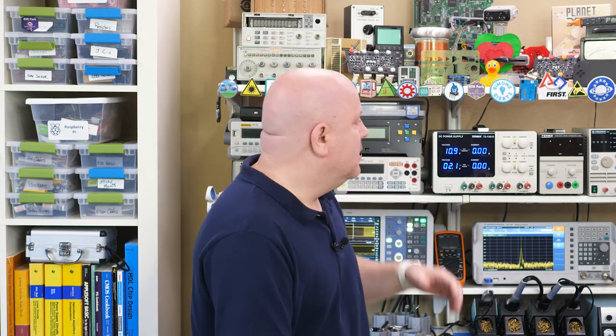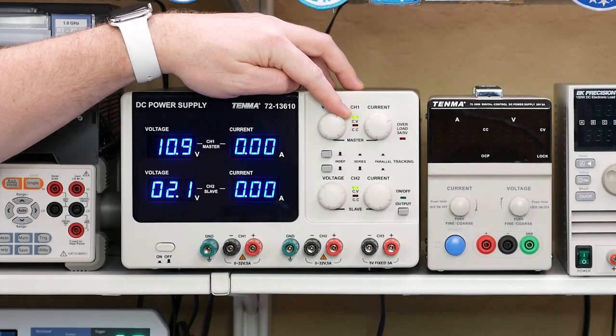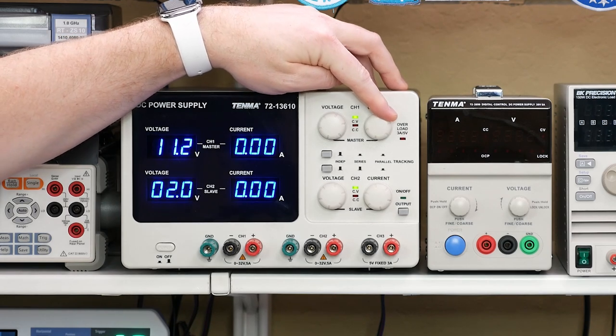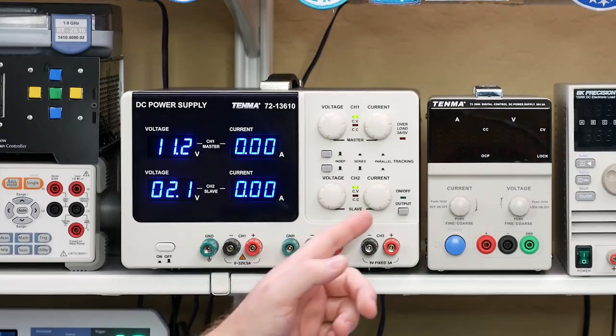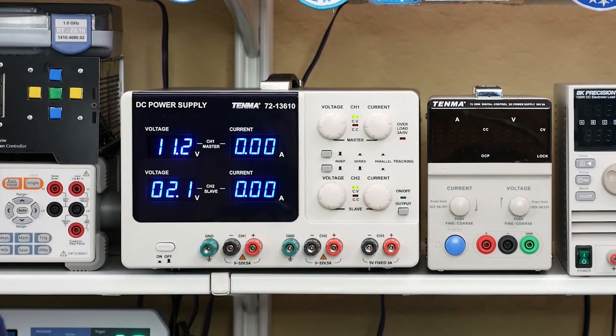When I'm shopping for a power supply I look for two features. The first is a current limit control. On this supply not only can we adjust the output voltage but we can also limit the output current. That is very useful when you want to protect a circuit. The next feature I want is an output control like this one. It makes it very easy to set the voltage and current before applying power to a circuit.